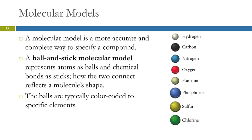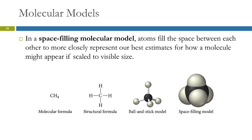In a model kit, those balls are color-coded in a similar way. Here's an example of a ball and stick model for CH4. Here's its molecular formula. Here's its structural formula. This shows that the carbon is in the middle and the four hydrogens are connected to it.